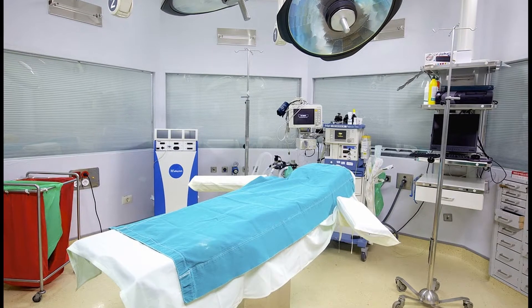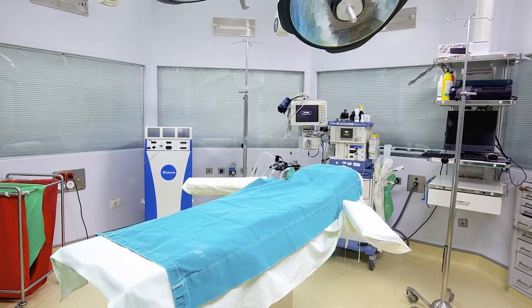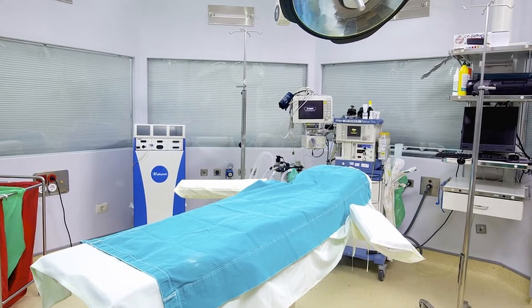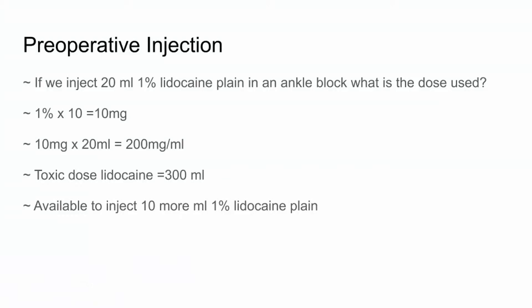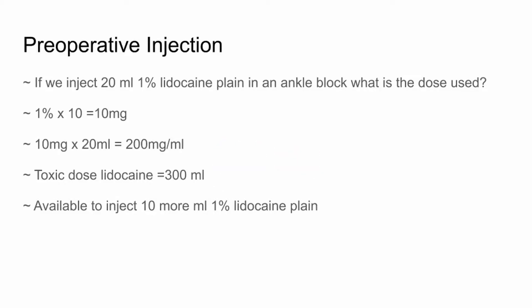When we do a preoperative injection — for example, injecting 20 milliliters of 1% lidocaine plain in an ankle block — we have to ask: what is the dose used? 1% lidocaine plain equals 10 mg/ml. If we inject 20 milliliters, that's 20 ml × 10 mg = 200 mg. We know the toxic dose of lidocaine plain is 300 mg, so that leaves us with 10 more milliliters of 1% lidocaine we could inject.